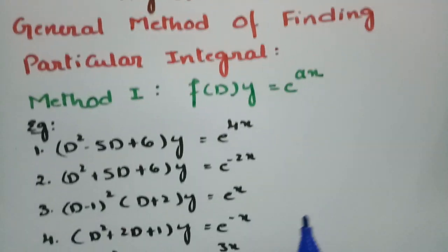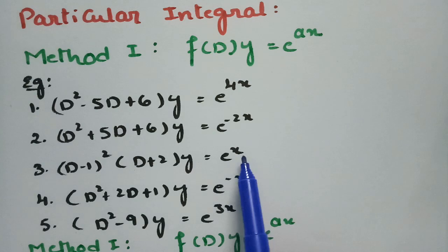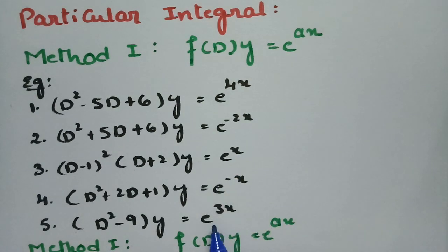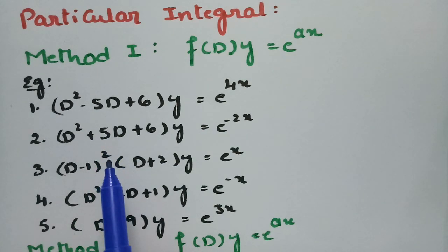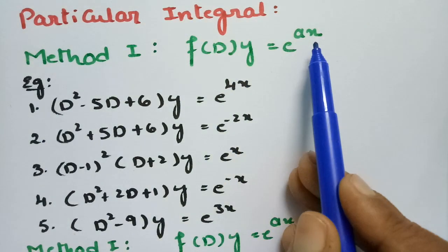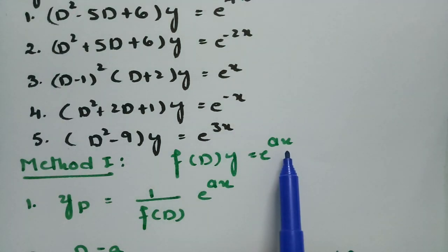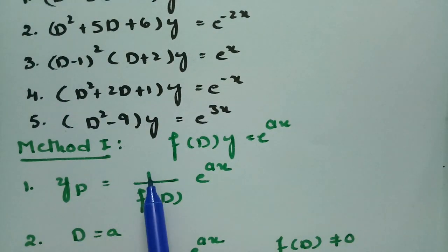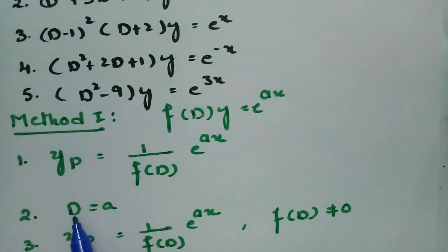The question will be of this form — e^(4x), e^(-2x), e^(x), e^(-x), and e^(3x). We have to find the complementary factor separately. For finding the particular integral: if f(D)y = e^(ax), the particular integral y_p is written as 1/f(D) · e^(ax), and we replace D with a, where a is the coefficient of x.